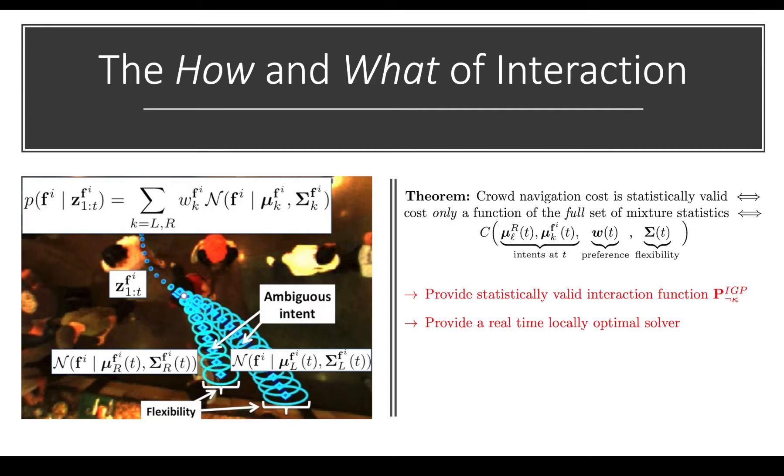And so in this paper, what we've done is we provided a statistically valid interaction function, which is called PIGP for interacting Gaussian processes. Although the form of this could be arguably different, we don't have any constraints on the form, just the kinds of parameters that are allowed. And we've also provided a real-time locally optimal solver.